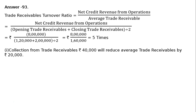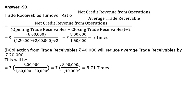Part A: Collection from trade receivables Rs 40,000 will reduce average trade receivables by Rs 20,000 because this will be divided by 2. The new ratio will be Rs 8 lakhs divided by (Rs 1 lakh 20,000 minus Rs 20,000), that is Rs 8 lakhs upon Rs 1 lakh 40,000, which equals 5.71 times. This is more than the original 5 times, so it will increase the trade receivables turnover ratio.